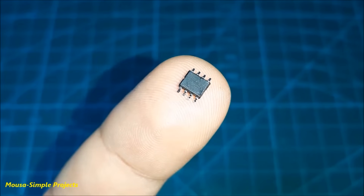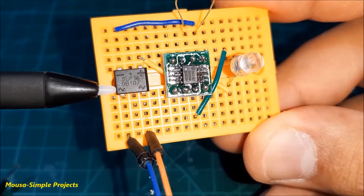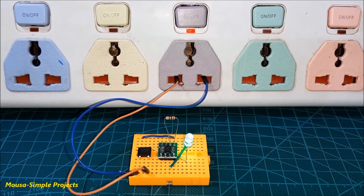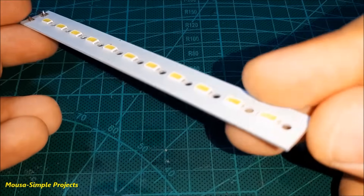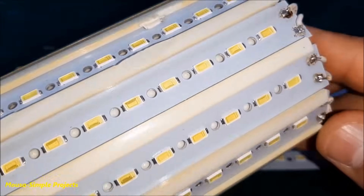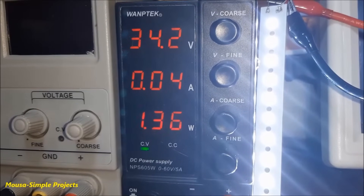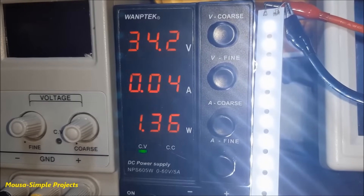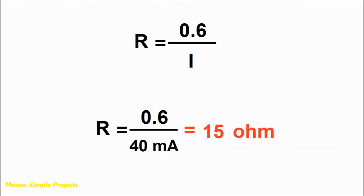As I mentioned, this IC can also work with high voltage. I added a bridge diode rectifier to the circuit so I can now connect it to mains voltage. Here I have an LED board consisting of 11 LEDs connected in series, salvaged from an old LED lamp. It works at around 34 volts and draws 40mA of current. I want to run it at mains voltage, so according to the formula, the resistor value must be 15 ohm.